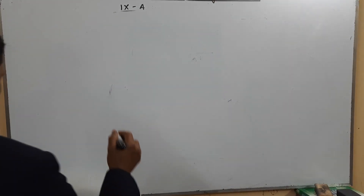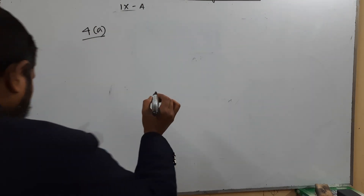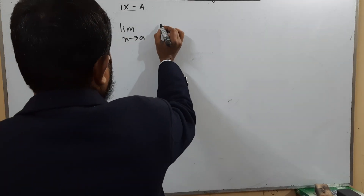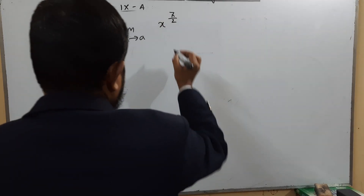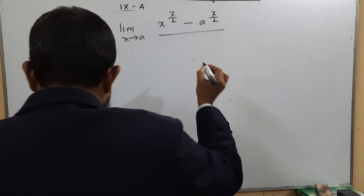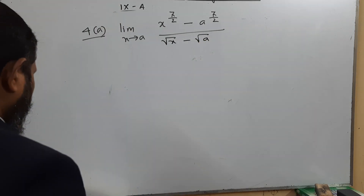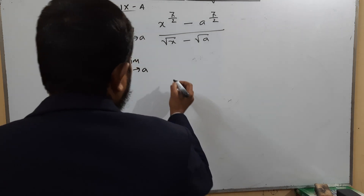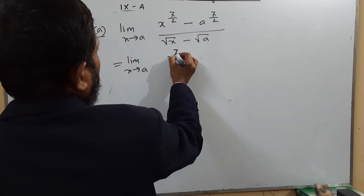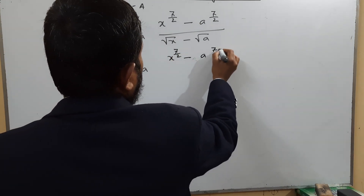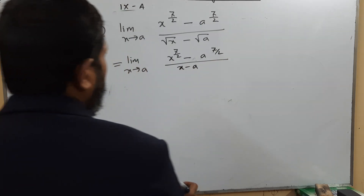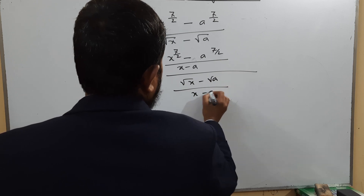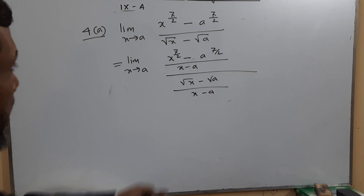Now for problem 4a: limit x tends to a of (x^(7/2) − a^(7/2)) / (√x − √a). We rewrite the denominator as (x^(1/2) − a^(1/2)). We can split this as [limit x tends to a of (x^(7/2) − a^(7/2))/(x − a)] divided by [limit x tends to a of (x^(1/2) − a^(1/2))/(x − a)], using the standard algebraic limit formula.